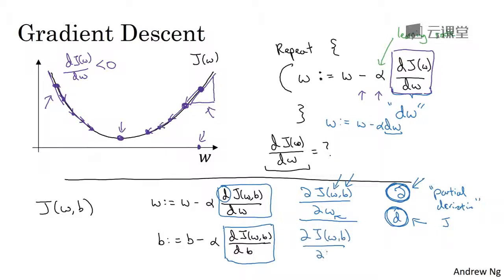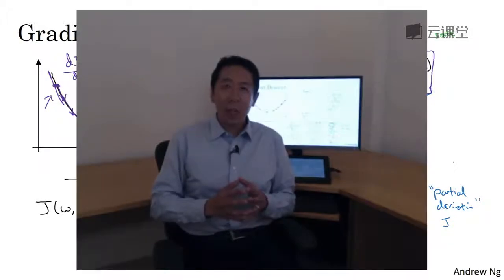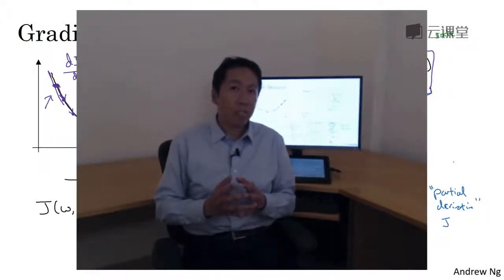But it really means the same thing as, almost the same thing as lowercase d. Finally, when you implement this in code, we're going to use the convention that this quantity, really, the amount by which you update w, will denote as the variable dw in your code. And this quantity, the amount by which you want to update b, will denote by the variable db in your code. All right, so that's how you can implement gradient descent.